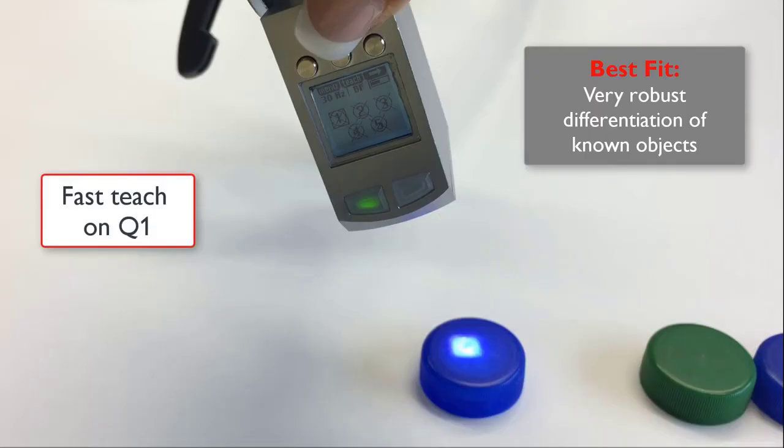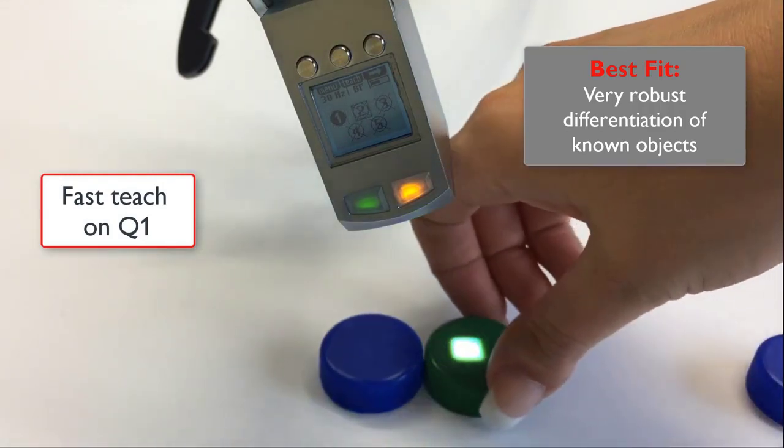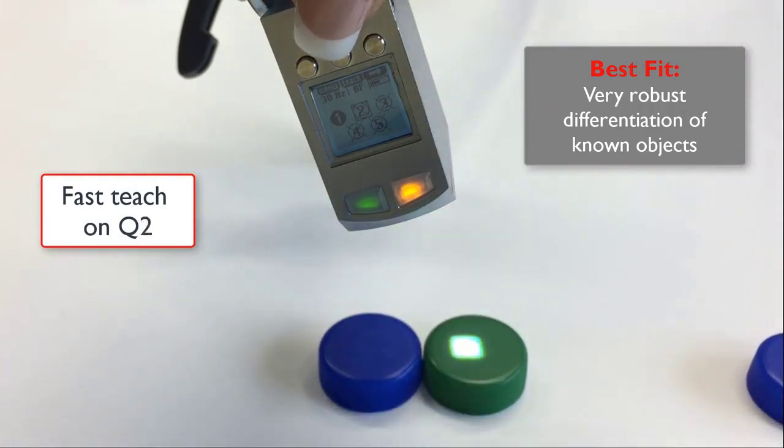Here's an example. We'll check the color of different bottle caps. Here we'll quick teach the blue one by pressing and holding teach for more than three seconds. Then we'll tap next. Teach color two, we'll press and hold for more than three seconds. We've taught green.